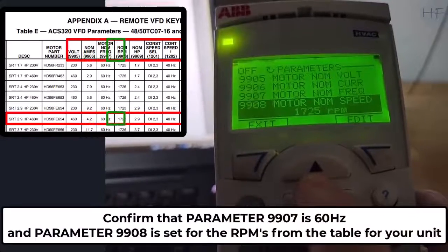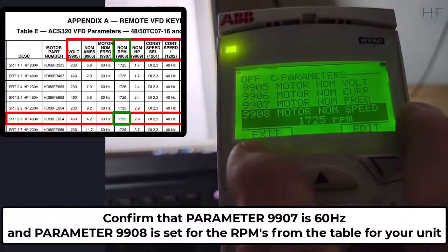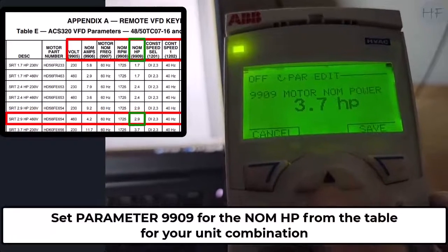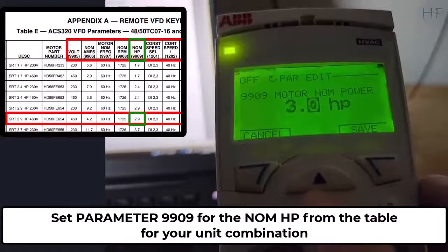Then verify that parameter 9907 is 60Hz and parameter 9908 is the value in the table. Set parameter 9909 for the horsepower rating of your motor.